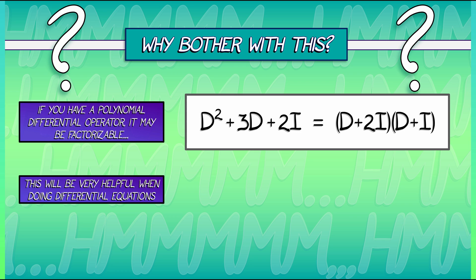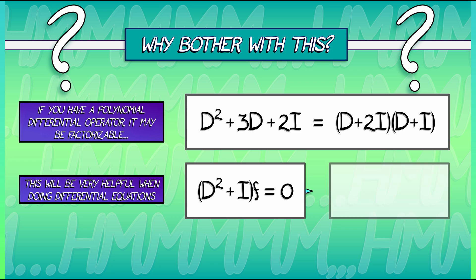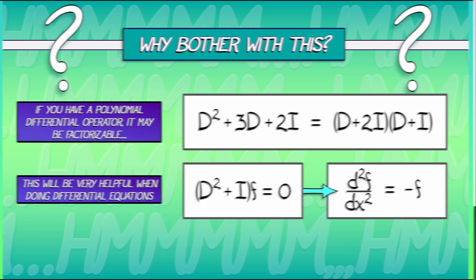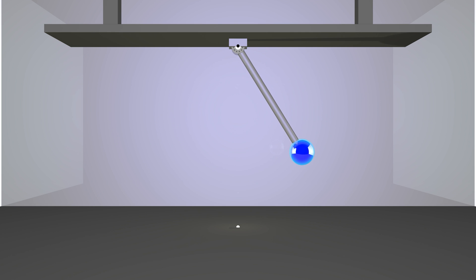For example, D squared plus I applied to f, set that equal to 0. That is a differential equation. Something that we can write out more explicitly as the second derivative of f is equal to minus f. That, incidentally, is a very important differential equation. Something that models a simple harmonic oscillator or a pendulum that is swinging back and forth.